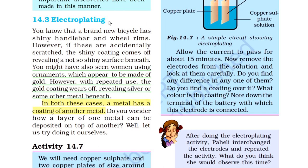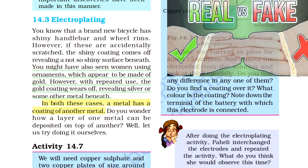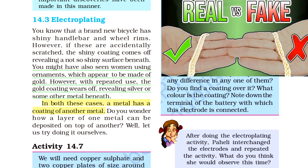अब electroplating होता क्या है और यह हमारी day to day life में क्या काम आता है? Electroplating का मतलब है — किसी एक metal पर किसी दूसरे metal की plating कर देना electricity की मदद से। Plating of one metal on another with the help of electricity is known as electroplating. जैसे हमारे घरों में नकली सोना होता है — उस पर केवल gold की plating की गई होती है, नीचे कोई और metal होता है।